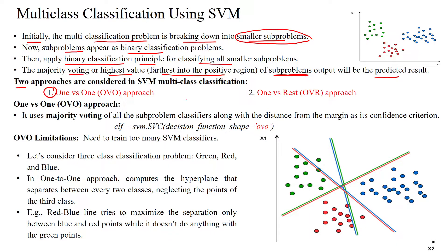One is the one versus one approach and another one is the one versus rest approach. In the one versus one approach, we will use majority voting of the sub-problem classifiers to predict the output. In Python, we will use the SVM package. From there, we are calling the SVC classifier. The decision function shape should be denoted as one versus one.